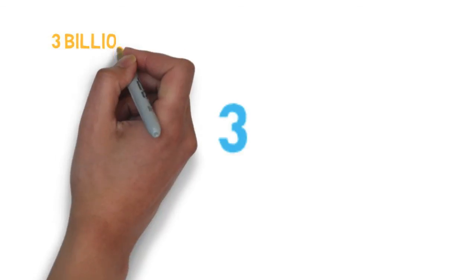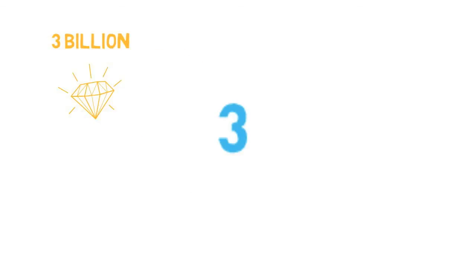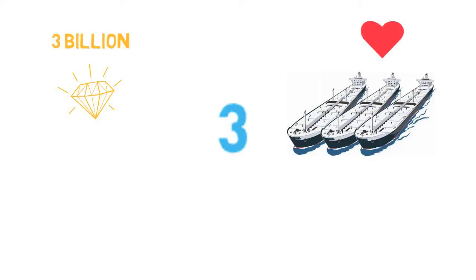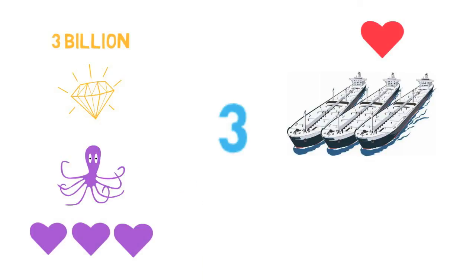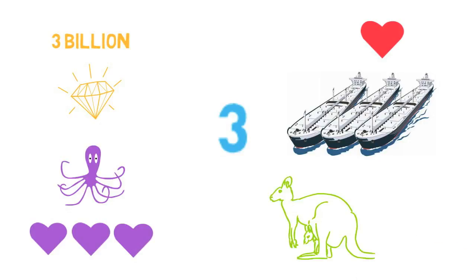3 billion years is how old are most diamonds. And your heart pumps enough blood in a lifetime to fill 3 supertankers. Also 3 is the number of octopus hearts. And what's more awesome, kangaroos have 3 vaginas!